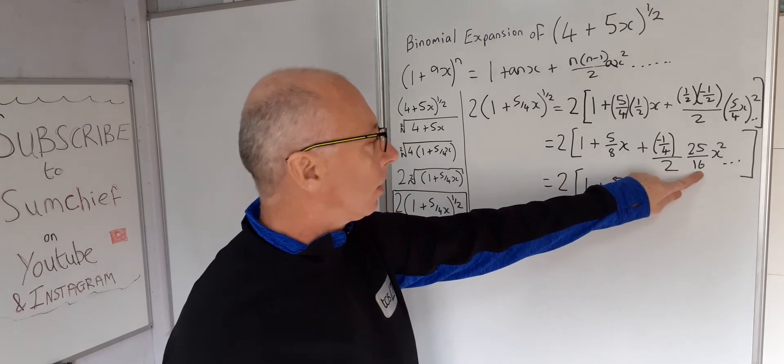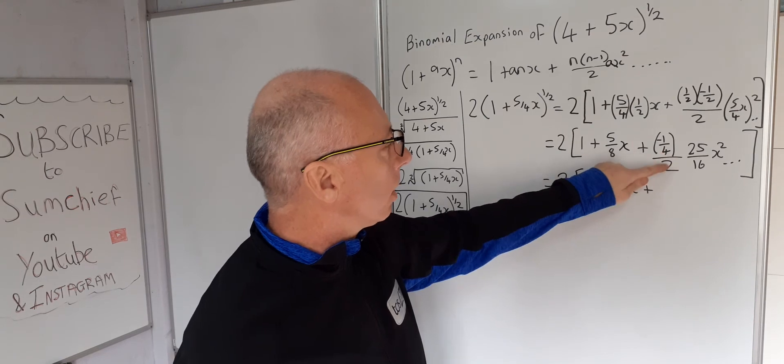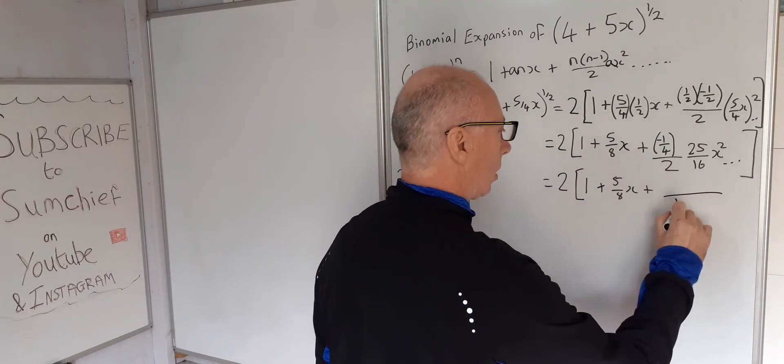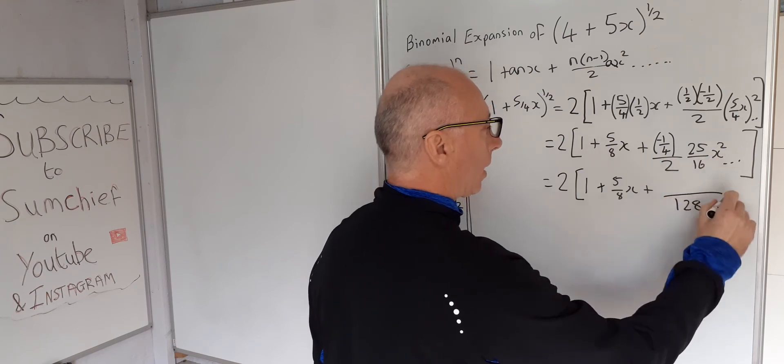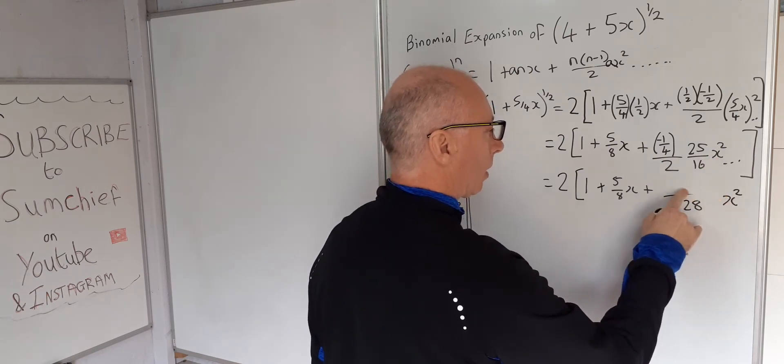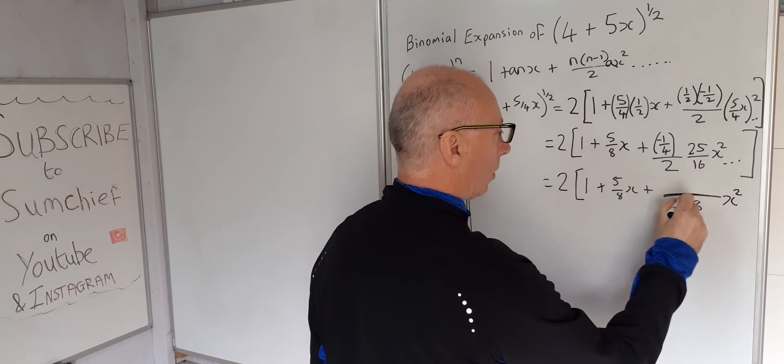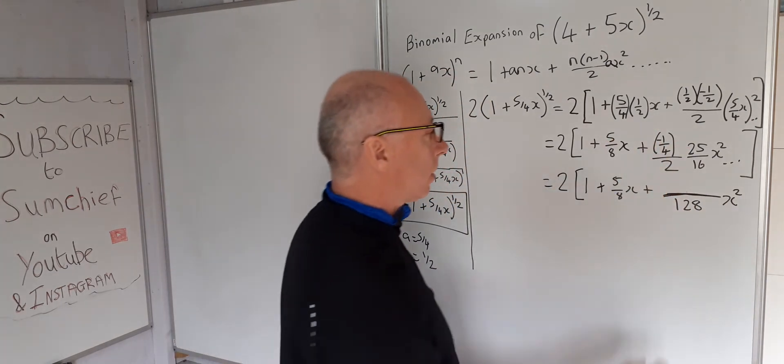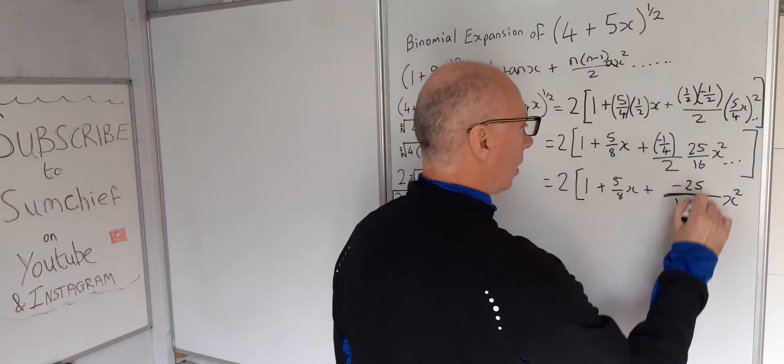Let's be careful here, 2 times 16 is 32, and we could bring this 4 down as well, so that's over 128, x squared, that won't change, and then minus 1 times 25 gives us minus 25.